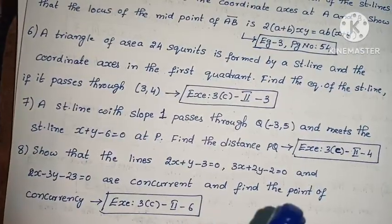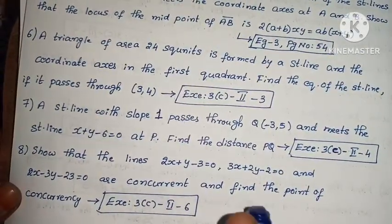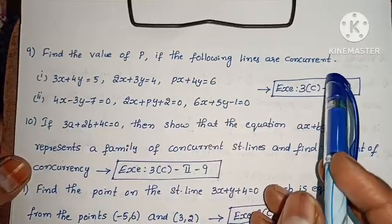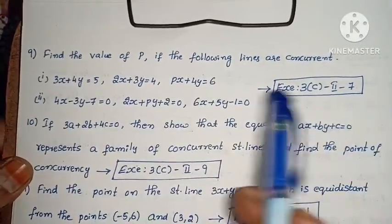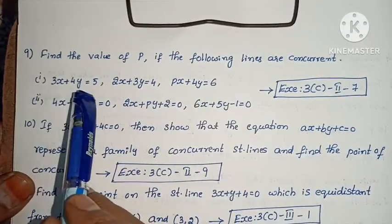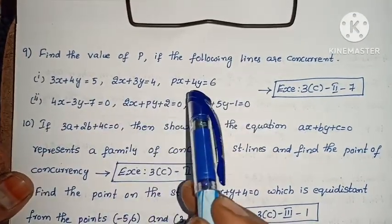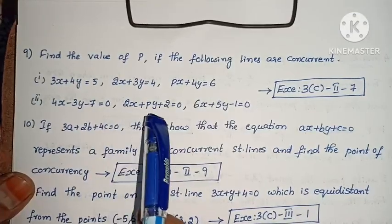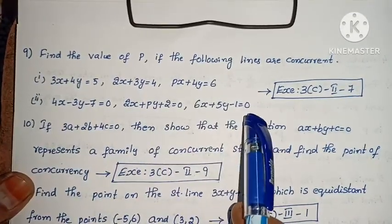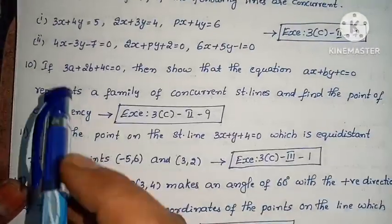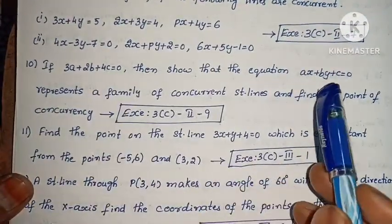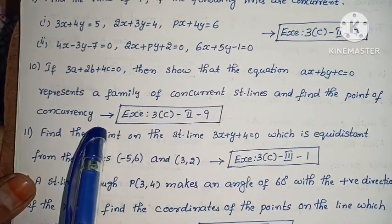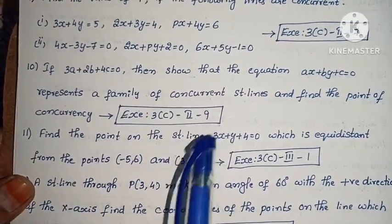Each model has about 2-3 problems. Next, find the value of p if the following lines are concurrent: (i) 3x plus 4y equals to 5, 2x plus 3y equals to 4, px plus 4y equals to 6; (ii) 4x minus 3y minus 7 equals to 0, 2x plus py plus 2 equals to 0, 6x plus 5y minus 1 equals to 0. Next, if 3a plus 2b plus 4c equals to 0, show that the equation ax plus by plus c equals to 0 represents a family of concurrent straight lines and find the point of concurrency.